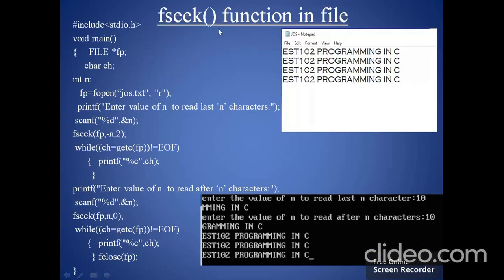Next, we will see a program. Through this program, you will get an idea about how the fseek function works inside a file program. What happens inside this program is: we already created a file named 'joes', and we stored some data inside the file — EST102 Programming in C — written 4 times. With the help of the fseek function, we will set the pointer position as we decide.